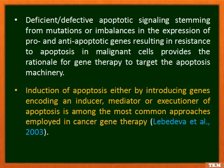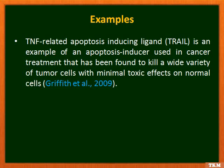Defective apoptotic signaling — stemming from mutations or imbalances in the expression of pro- or anti-apoptotic genes — results in resistance to apoptosis in malignant cells. This provides the rationale for gene therapy targeting the apoptosis machinery. Since cancerous cells have a defective apoptosis mechanism, they do not die naturally and keep growing uncontrollably. By inserting a corrective gene, we can re-initiate the apoptosis machinery. Induction of apoptosis by introducing genes encoding an inducer, mediator, or executioner of apoptosis is among the most common approaches in cancer gene therapy.